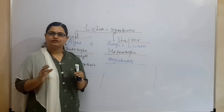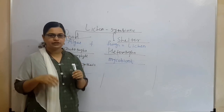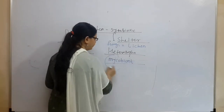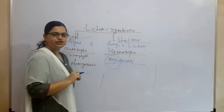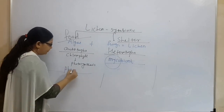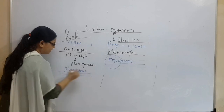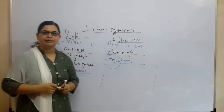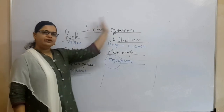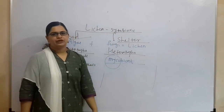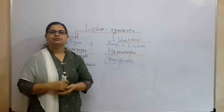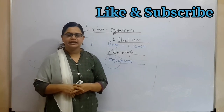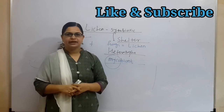In the lichen symbiotic association, the fungal member is called the mycobiont (from mycology — study of fungi) and the algal member is called the phycobiont (from phycology — study of algae). Algae produce food and fungi provide shelter. Lichens are a very important pollution indicator. Today we have discussed viruses, viroids, prions, and lichens. If you have any doubt, let me know. See you in the next session. Thank you.